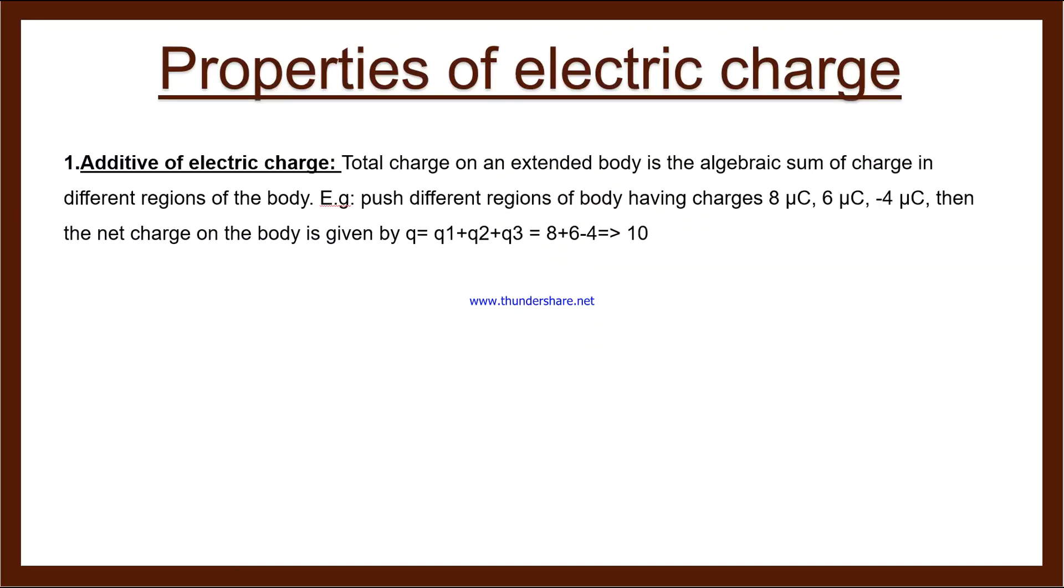Property number one is additivity of electric charge. The additive word tells us that we can add a number of charges together. The total charge on an extended body is the algebraic sum - algebraic means total sum. In physics, when we write algebraic word, it means total sum. It's the algebraic sum of charges in different regions of the body.